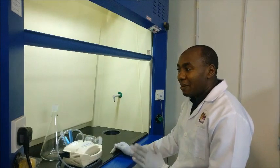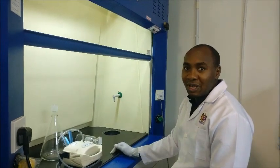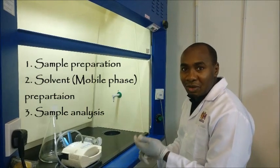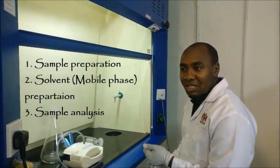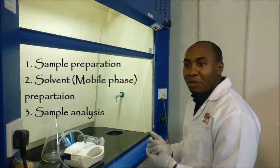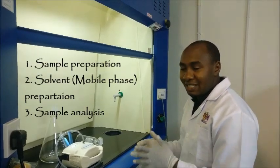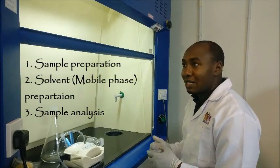HPLC analysis involves multiple steps, mainly three stages. One is the sample preparation. Second step is the solvent preparation. And third one is the analysis, that is the sample analysis itself.